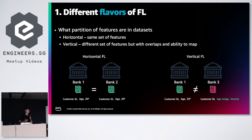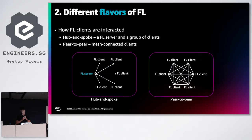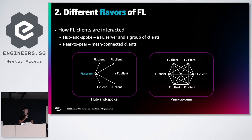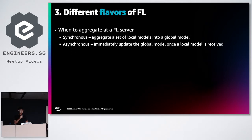This has more insights for performing predictions. This field is really new with a lot of research online, so feel free to Google and reach out. There are also different ways the federated learning server can be positioned. Quite commonly, the server is at the center and FL clients send weights to this centralized server. But it can also be peer-to-peer — a mesh-connected network where clients keep updating models asynchronously or synchronously based on those around them, which democratizes the process. As for aggregation timing, there's synchronous — aggregating a set of local models into a global model all at once — and asynchronous, where you update the global model each time a local model is received.